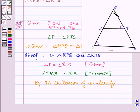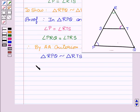So we can say that triangle RPQ is similar to triangle RTS, hence proved. Hope you understood this solution and enjoyed the session. Goodbye and take care.